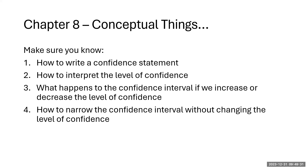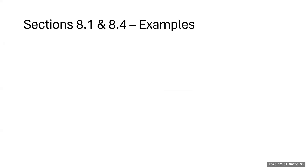Conceptual things to know: be able to write a confidence statement; interpret the level of confidence as 'if we have 100 samples, we expect blank to contain the parameter'; understand what happens if we alter the level of confidence; and understand how to narrow the confidence interval without changing the level of confidence. Points three and four are very important conceptual pieces we'll explore in examples.